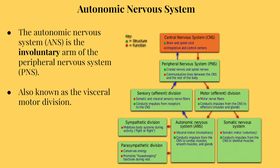The autonomic nervous system is the involuntary branch of the PNS, peripheral nervous system. Involuntary means to do something unconsciously or without will. So when you hear autonomic, think automatic. The autonomic division of the PNS carries out a lot of the functions in the body that are done automatically without will.